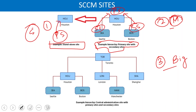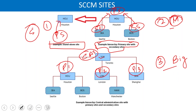For a large organization with more than 100,000 devices and more than one primary site, the Central Administration Site sits at the top. Multiple primary sites — say primary site 1, 2, and 3 — report to the CAS. Secondary sites report to their respective primary sites.